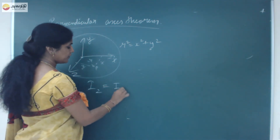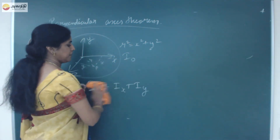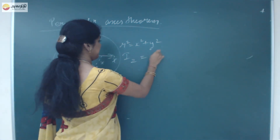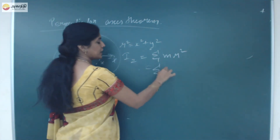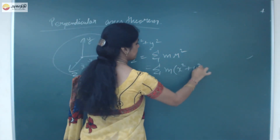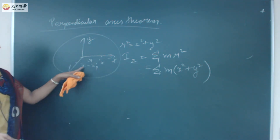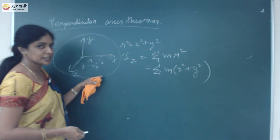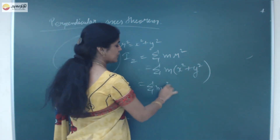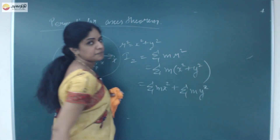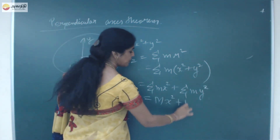I_Z equals sigma of I_Z, which equals sigma of I_X plus I_Y. The moment of inertia is given by M·R², where R is the distance of point P from the origin. R is nothing but √(X² + Y²). So this is nothing but summation of M·X² plus M·Y².